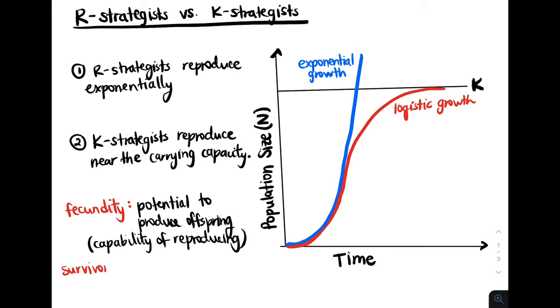Now, survivorship is essentially the number or proportion of individuals that survive to each age for a specific species, but we can think of it as how long you live.